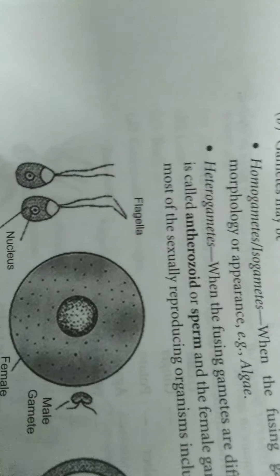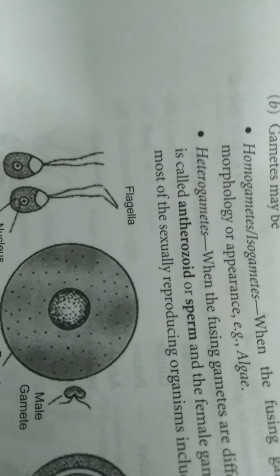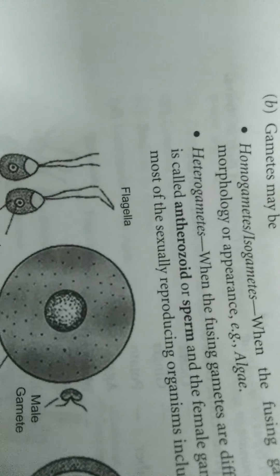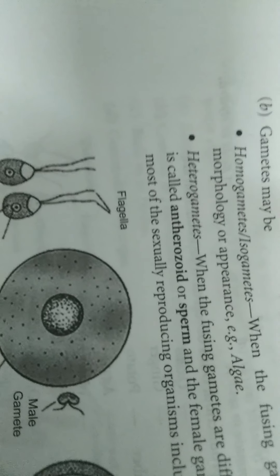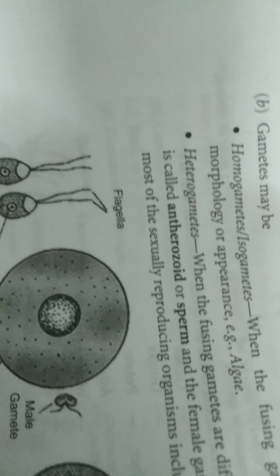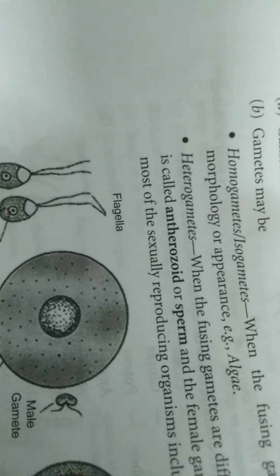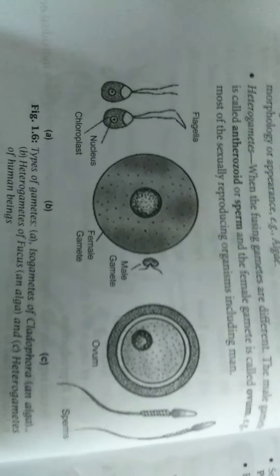Isogametes in algae. Heterogametes in algae — Fucus. Heterogametes in Homo sapiens, that is, humans.